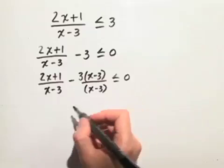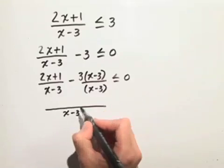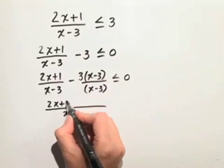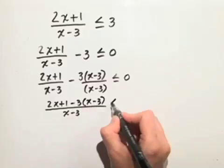Now we can write the left hand side with one denominator, x minus 3, and we'll combine the numerator: 2x plus 1 minus 3 times the quantity x minus 3.